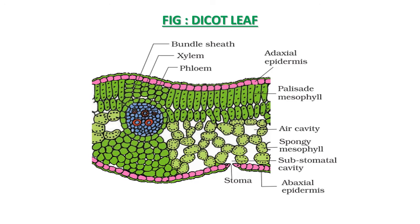In the section of the dicot leaf, vascular bundles made up of xylem and phloem are clearly visible, surrounded by bundle sheath cells. The opening of stomata, which function for transpiration, can also be seen — these pore-like structures are located on both epidermis of the dicot leaf.